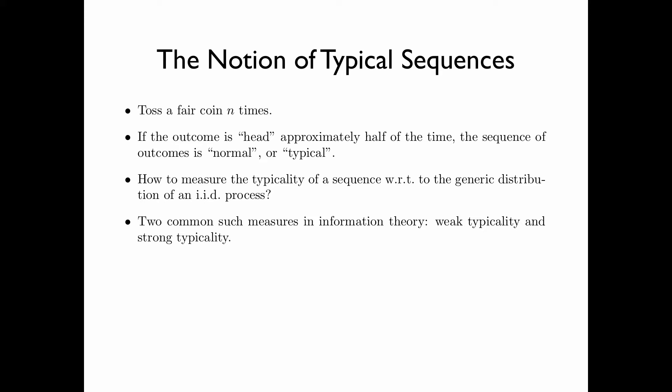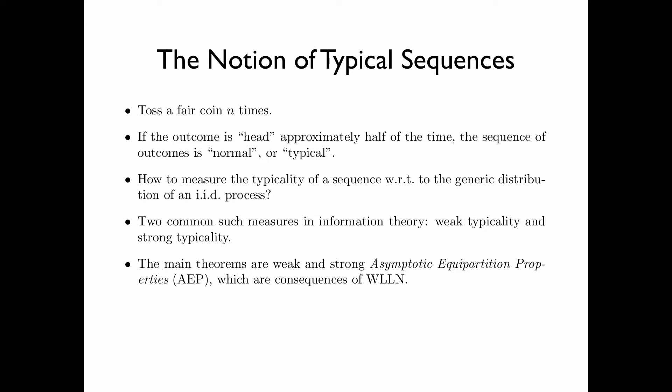There are two commonly used measures in information theory: weak typicality and strong typicality. The main theorems are the weak and strong asymptotic equipartition property, or AEP, which are consequences of the weak law of large numbers. In this chapter, we will discuss weak typicality.